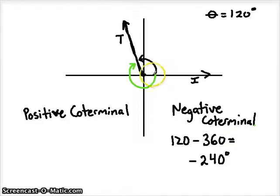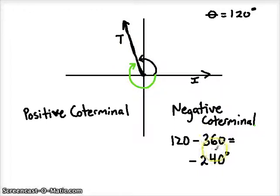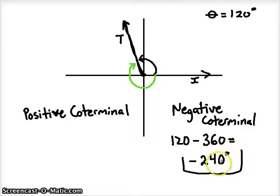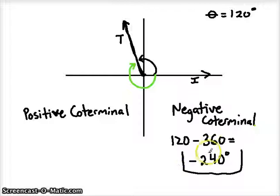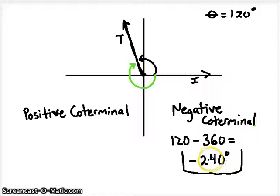We can visualize negative 240 degrees: it's slightly more than 180 degrees but not quite 270, and it's negative so it opens clockwise — that looks about right. That would be the first negative coterminal we could find. You could subtract another 360 to get another negative coterminal, but we want the first one so we can all get the same answer.